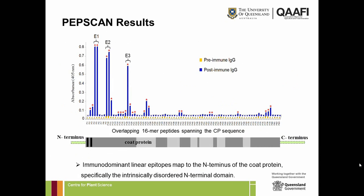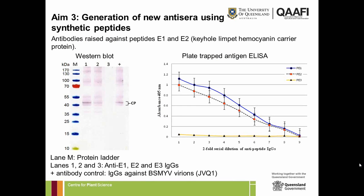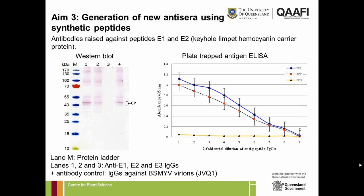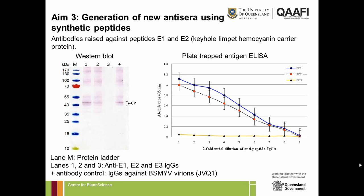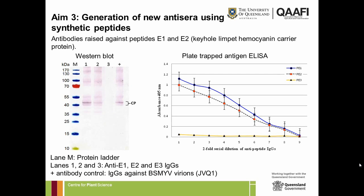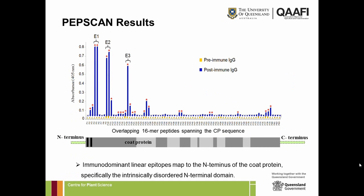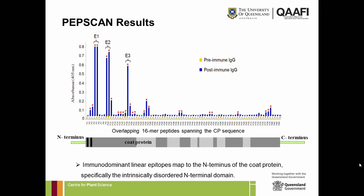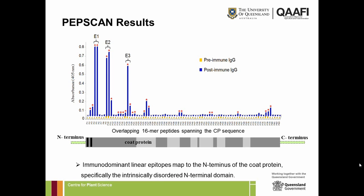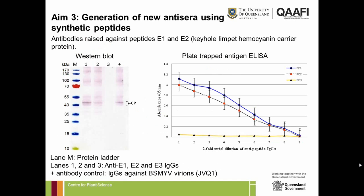We've continued this work with Nirna, an honours student, who showed this is a general phenomenon for all BSV species — the N-terminus of the coat protein contains major linear epitopes for four other BSV species. We then ordered a couple more synthetic peptides, taking E1, E2, and E3 — the two major linear epitopes and a third — and resynthesised these peptides.